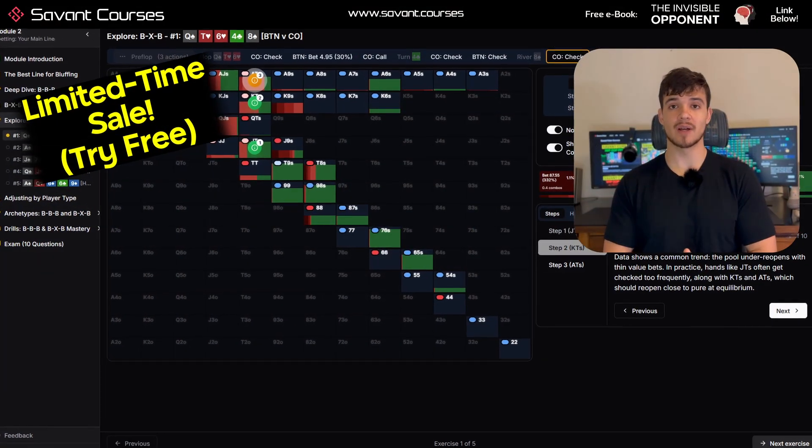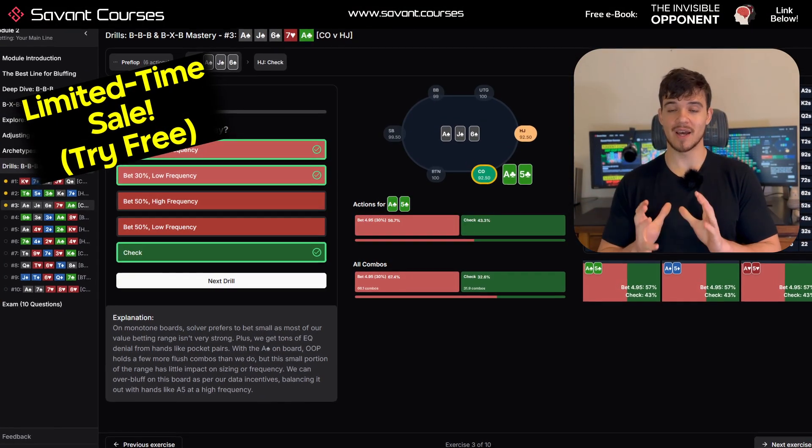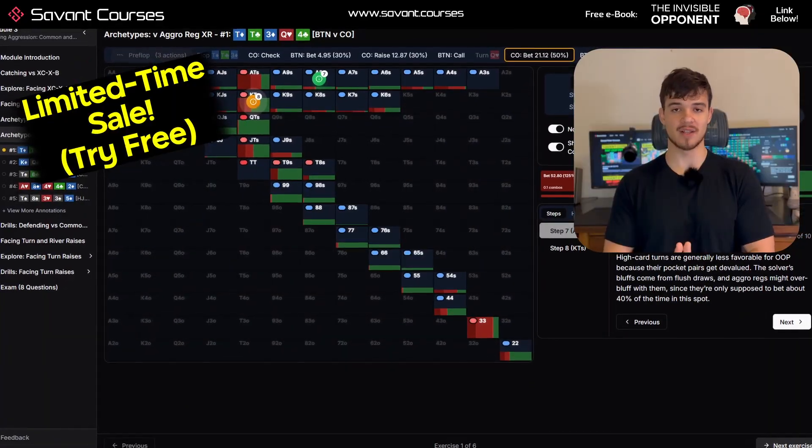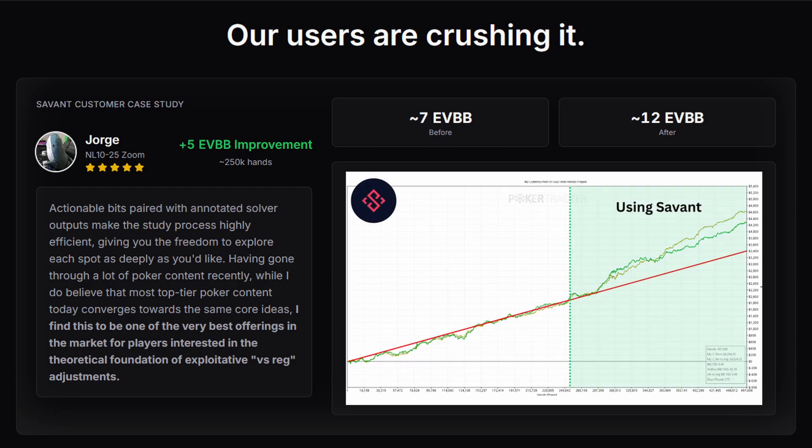However, the best regs at each stake will demolish you for making this error, because it's so predictable. At Savant Courses, we teach people how to avoid making this error against those players, how to fight back, and how to demolish those who make it themselves. And according to the data, it works. Take a look at this client profile. Over a massive sample of almost half a million hands, we were able to increase their win rate by five big blinds per hundred. You can quite literally see the exact moment where they started using Savant.